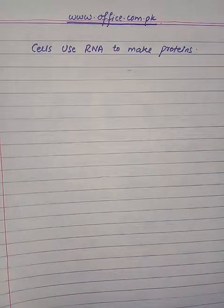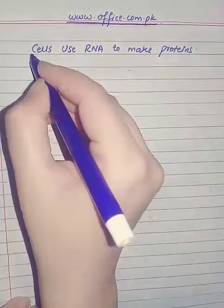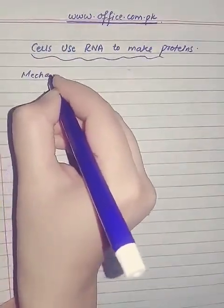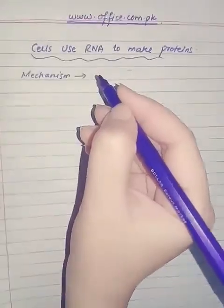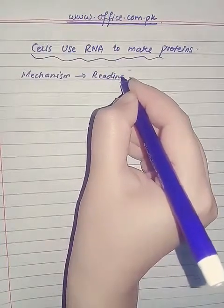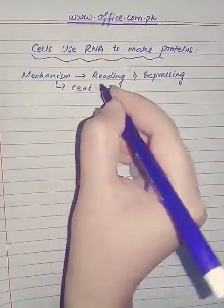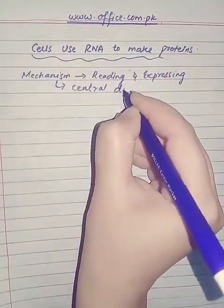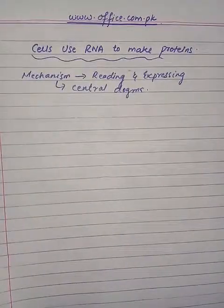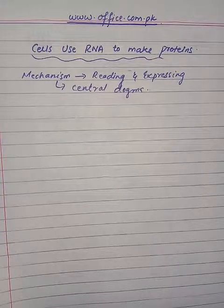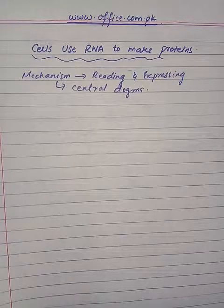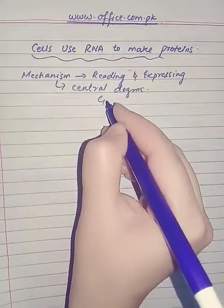Dear students, we are discussing genes and their expression — specifically how cells use RNA to make proteins. All organisms have a basic mechanism for reading and expressing a particular gene. This whole mechanism is known as the central dogma. The genetic information is present inside DNA, which is the main fountainhead — all information originates from there. The genetic information flows into RNA and is then converted into proteins.